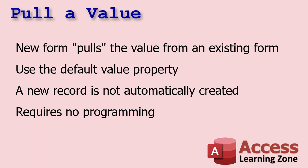Pulling a value involves opening up a new form, and that new form will pull the value from an existing form. For example, with customers and orders: the customer form has a button on it to open up the order form, and the order form can then get the customer ID from the open customer form. We'll use the default value property. This does not necessarily create a new record, but if you continue to add other things like a description, it will create a new record using that default value. This requires no programming.